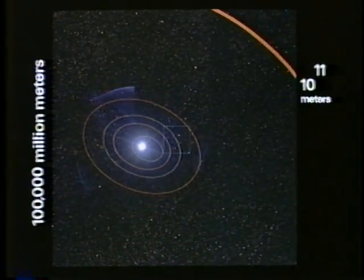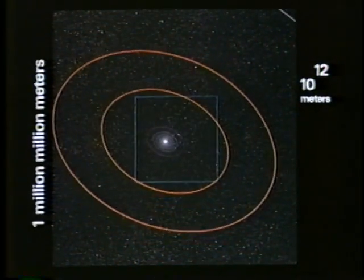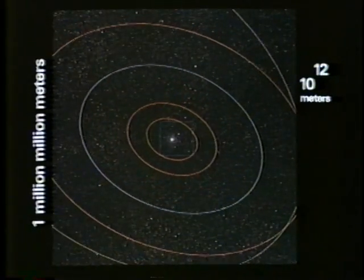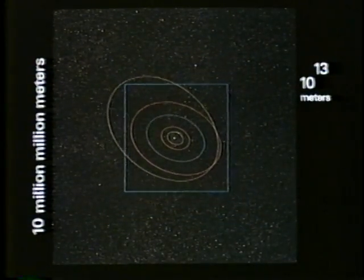Followed by the massive outer planets, swinging wide in their big orbits. That odd orbit belongs to Pluto. A fringe of myriad comets too faint to see completes the solar system.